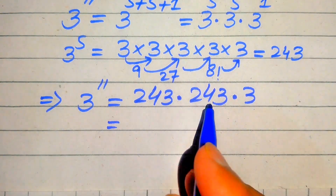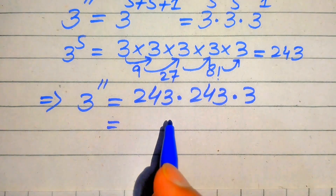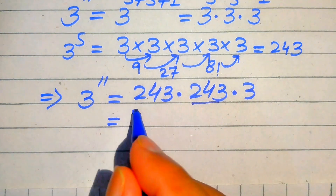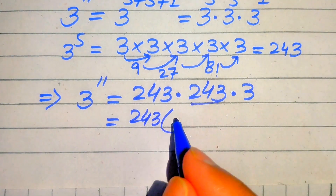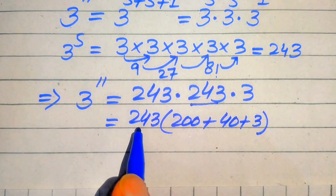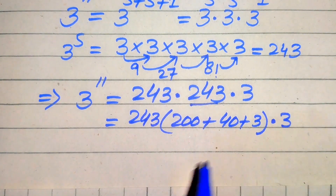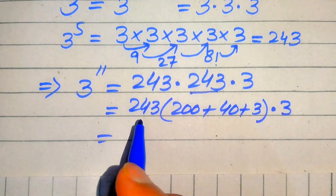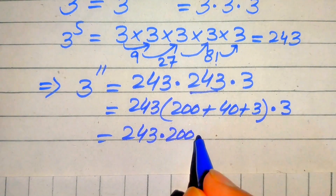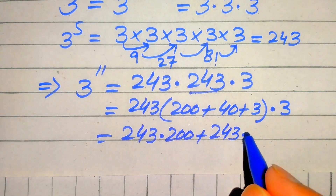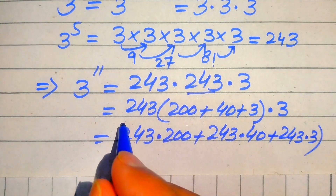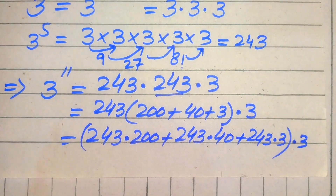Now we multiply these two larger numbers without using a calculator. We break 243 as 200 plus 40 plus 3, then multiply each part: 243 multiplied by 200, plus 243 multiplied by 40, plus 243 multiplied by 3. The resulting answer is then multiplied by 3.